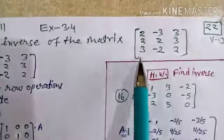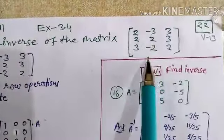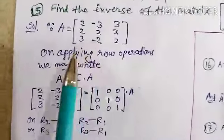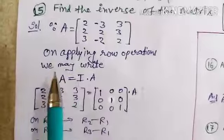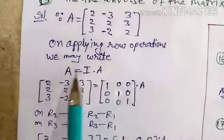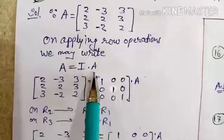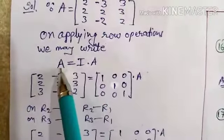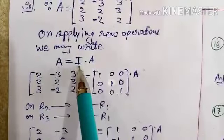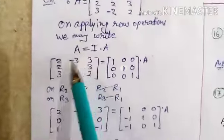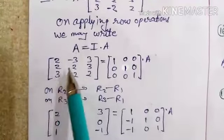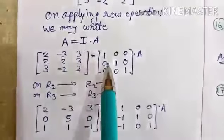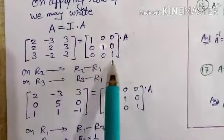The matrix is: first column 2, 2, 3; second column minus 3, 2, minus 2; third column 3, 3, 2. Since this is matrix A, if we decide to apply row operations, we write A equals I times A. It is a row operation, so it will be applied on the left-hand side. Write matrix A as [2, 2, 3 / minus 3, 2, minus 2 / 3, 3, 2] and identity matrix I as [1, 0, 0 / 0, 1, 0 / 0, 0, 1].